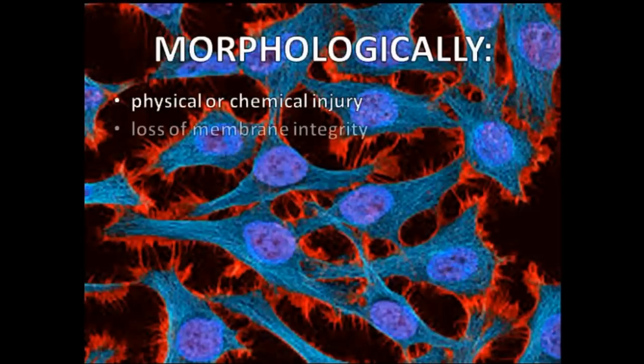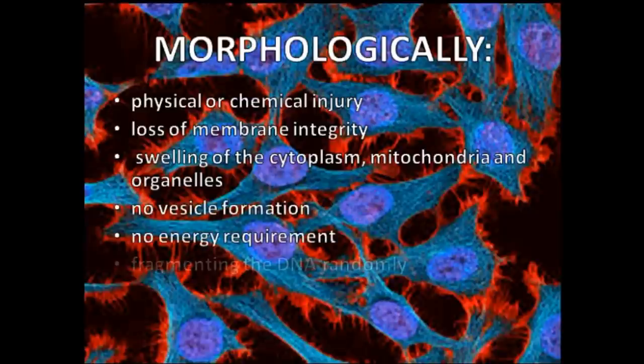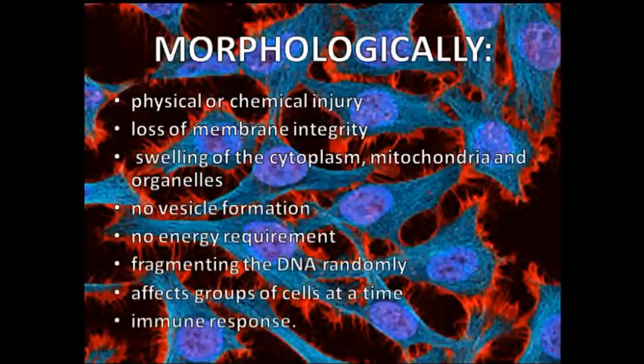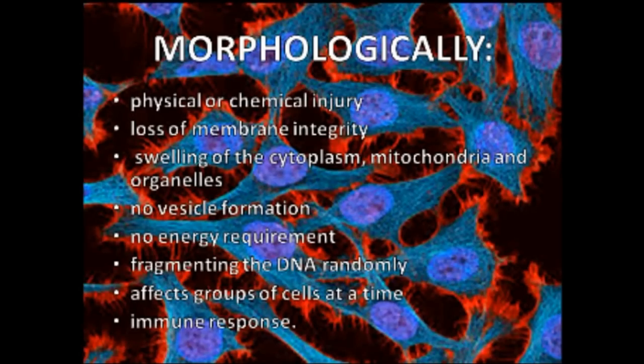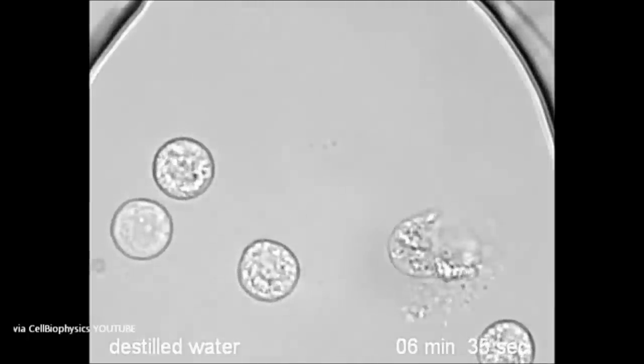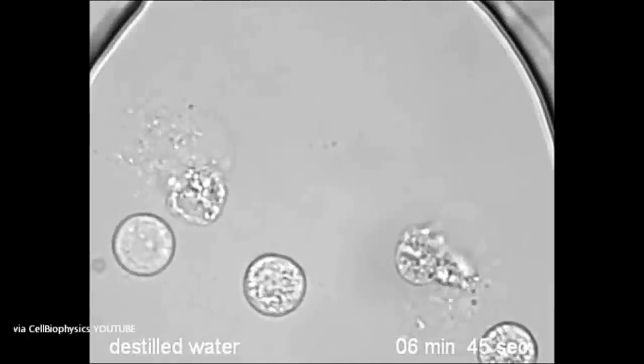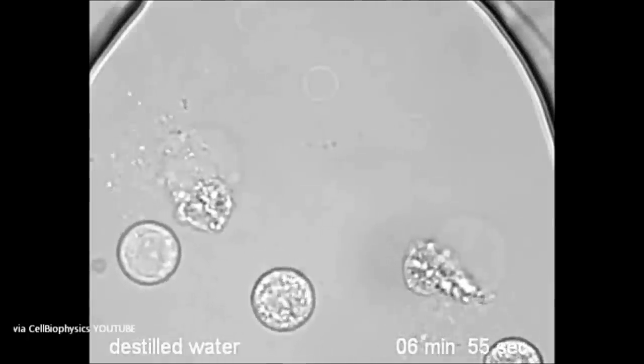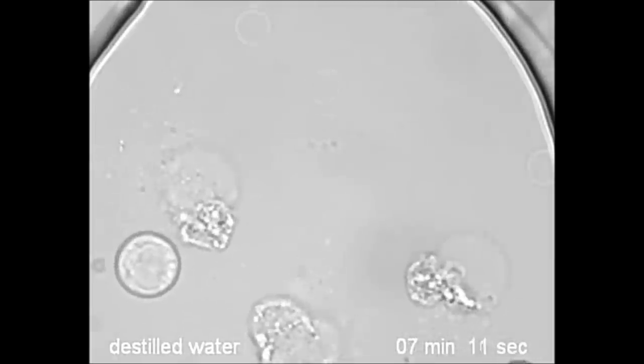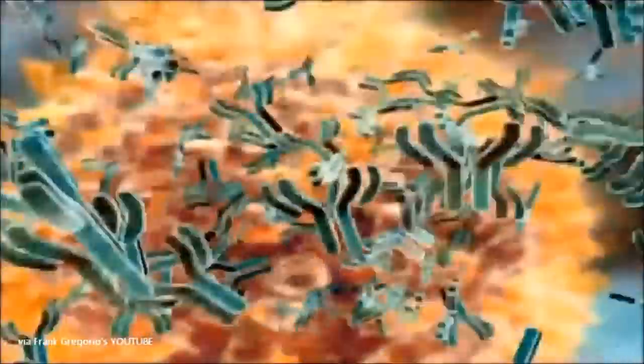In contrast, necrosis is a form of cell injury causing premature death of cells, resulting from exposure to a physical or chemical injury. Necrosis is the explosive outcome often associated with cell death. The cell membrane loses its integrity due to the swelling of the cytoplasm, mitochondria, and organelles. There is no vesicle formation and no energy requirement — the cell simply lyses, fragmenting the DNA randomly. Necrosis affects groups of cells at a time and consequently causes an immune response.